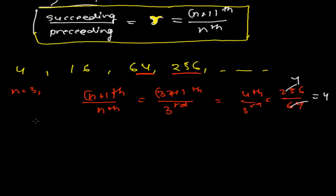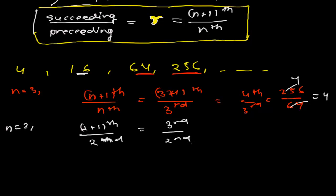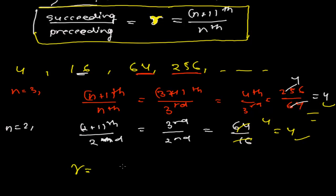Now taking n = 2: the 3rd term over the 2nd term is 64 ÷ 16 = 4. Whether you take n = 3 or n = 2, every time you divide the succeeding term by the preceding term you get the constant 4. This constant r is called the common ratio.